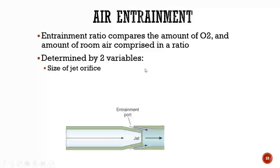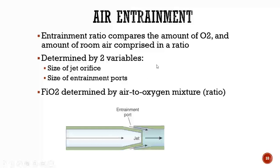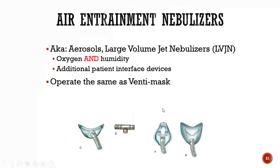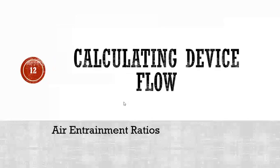For air entrainment, we look at two components: the size of the jet orifice and the size of the air entrainment ports. With these air entrainment masks or systems, the FiO2 is determined by an air-to-oxygen mixture ratio. The FiO2 does not necessarily change with the liter flow — you'll see examples of that more in lab.